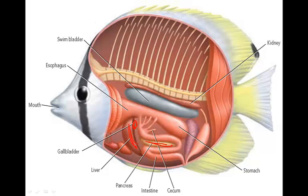As far as the excretory system is concerned, we see the kidney, which filters waste materials from the blood. It's extremely important in regulating water and salt concentrations within a fish, and this depends on whether the fish is saltwater or freshwater. There are some fish that can actually survive in both.